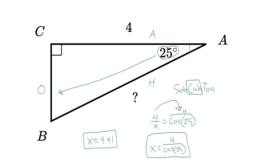That is our answer. If the number is on top as the numerator, you divide that number by your trig function. If the number is on the bottom as the denominator, you multiply by the function. X equals 4 divided by cos of 25, which rounds to 4.41.